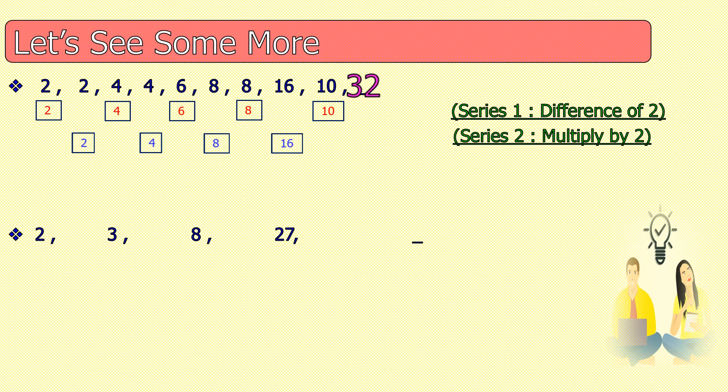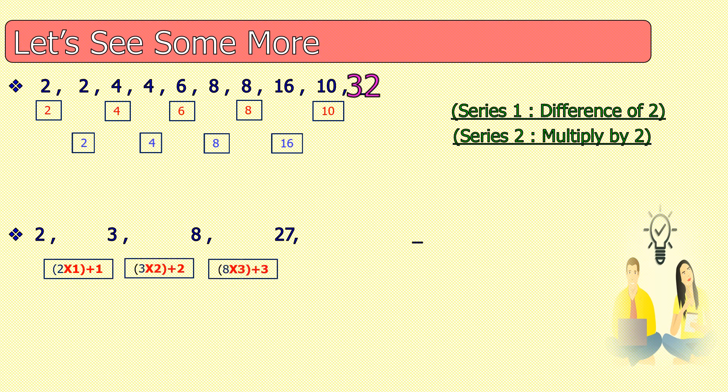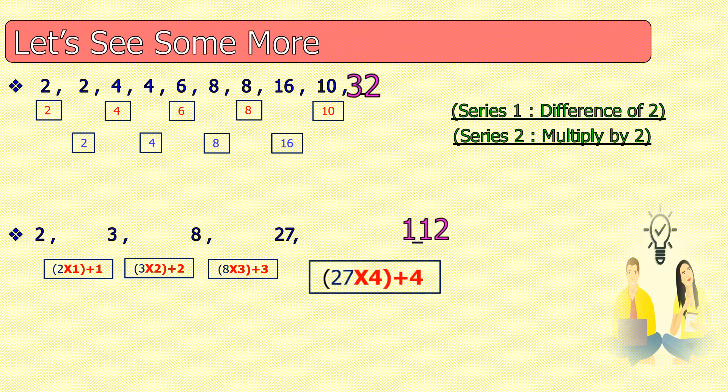In this series, there are two operators used with one number to get the second number. So: 2×1+1=3, 3×2+2=8, 8×3+3=27, and 27×4+4=112. This is the answer.